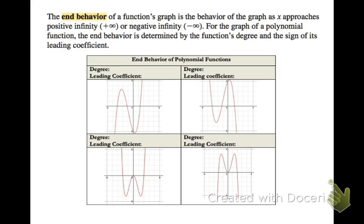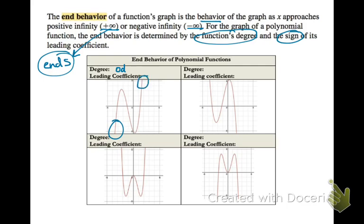Let's talk about end behavior — it's simply where the graph ends. You can tell where it ends based on looking at the function's degree and sign. Looking at the chart in the upper left, notice you have a graph whose ends are in opposite directions. That means you would have a function of an odd degree. Same with the graph on the right — the ends are opposite; in this case, one end is up and the other is down.